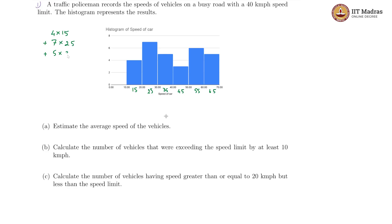We have 5 into 35 plus this is 3, so 3 into 45 plus 6. 6 into 55 and last one this is 5, so 5 into 65. This is the total calculation we are supposed to be doing.